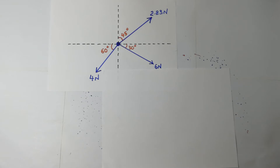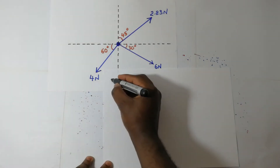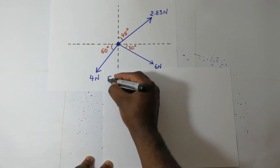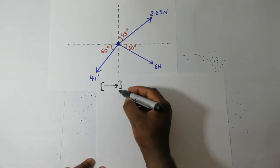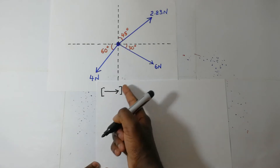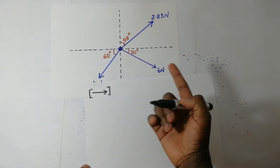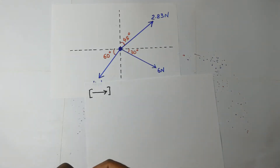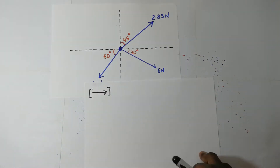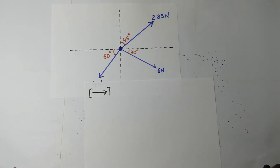So we'll get started by resolving these forces along the X axis. To resolve these forces along the X axis, I will draw that arrow to show that I'm resolving along the X axis. Now, when we are resolving these forces along the X axis or along the Y axis, we do so using trigonometrical identities.